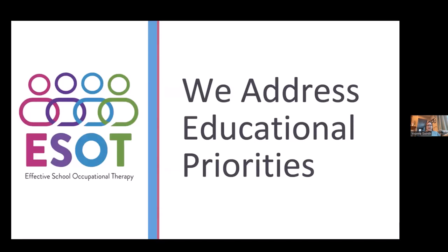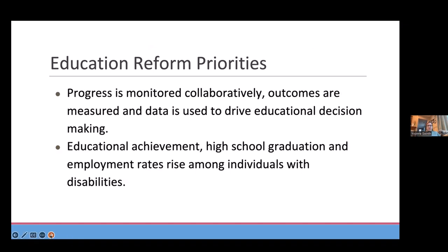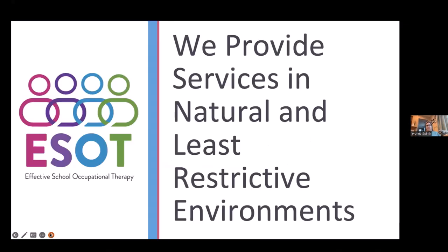We have to address these educational priorities that we're seeing emerge. Some of the priorities within ed reform are that children with disabilities need to be educated in neighborhood schools and regular classrooms, and that teams of professionals work together to meet student needs. Progress needs to be monitored collaboratively. We need to know we're reaching our outcomes, and educational achievement — including high graduation and employment rates — all needs to be addressed for individuals with disabilities.